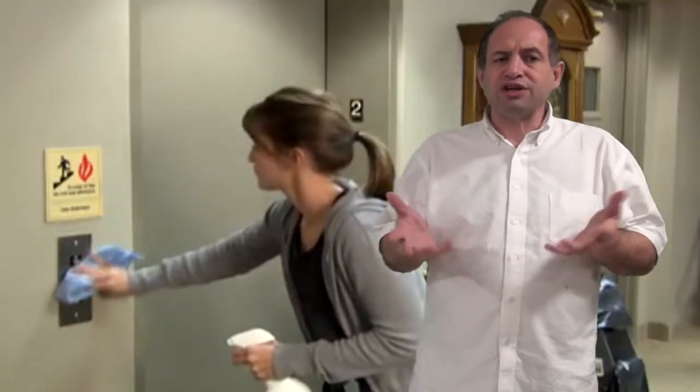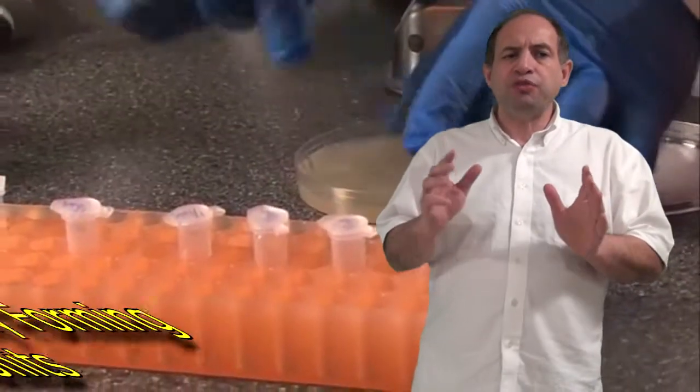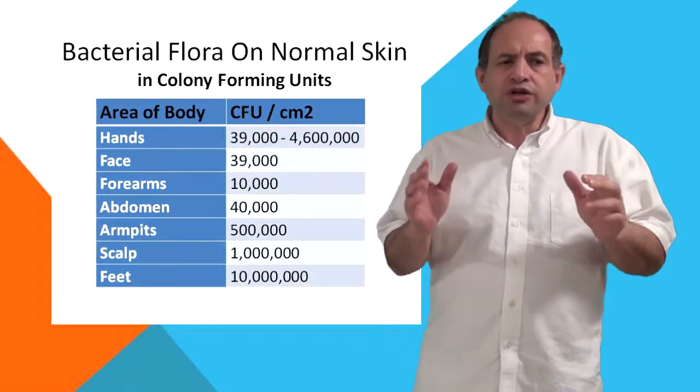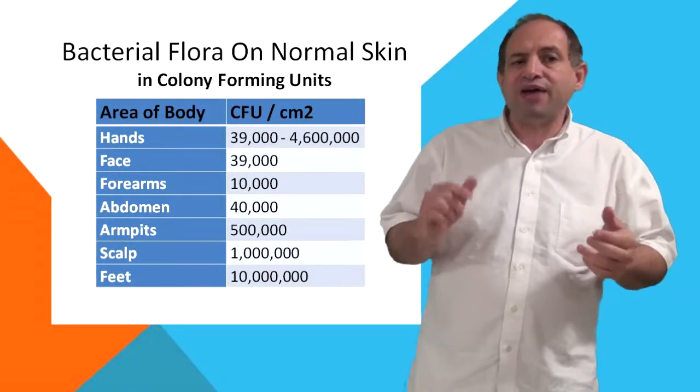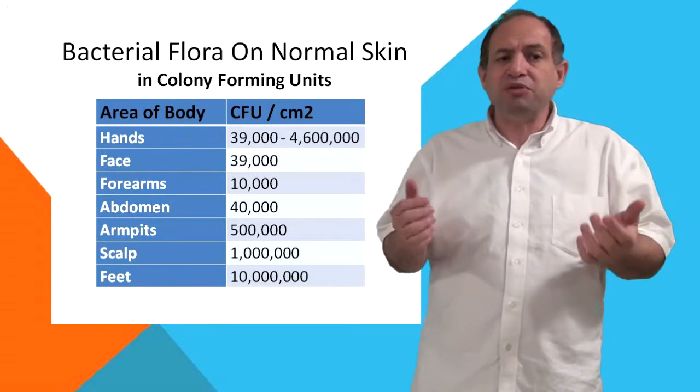But normal skin is colonized with many bacteria. We measure the amount of bacteria on a surface with the number of colony-forming units per square centimeter. Your scalp has a million, your armpits have half a million, abdomen 40,000, and forearm 10,000. Parts of your feet can have 10 million.